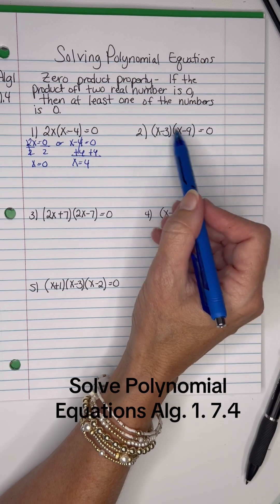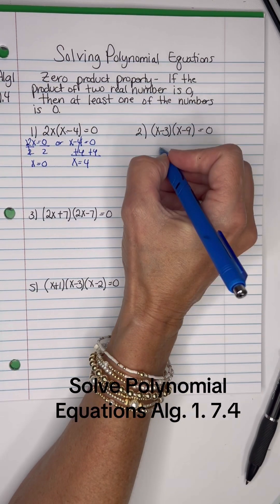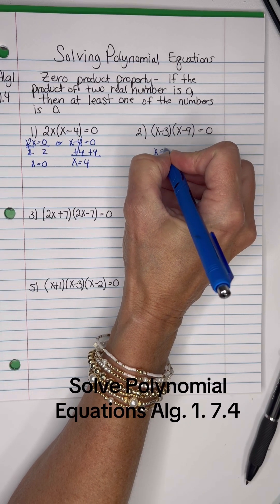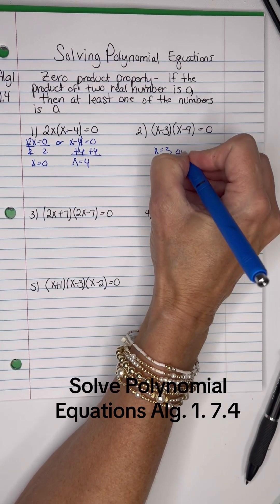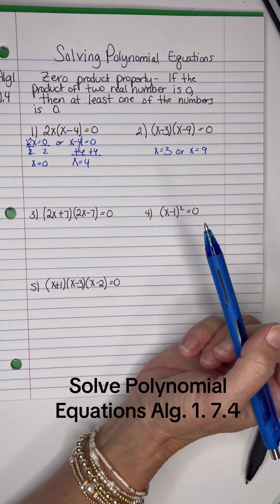So with the shortcut for this one, if either X minus 3 equals zero, that would be X would be equal to 3. Or X minus 9 equals zero, that would be X equals 9. So it's simply the opposite sign.